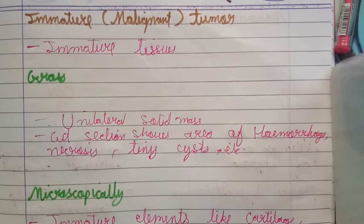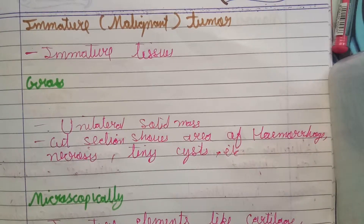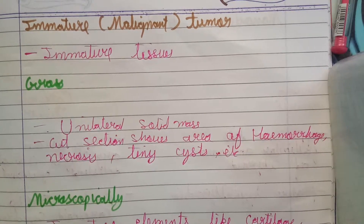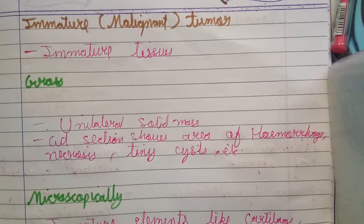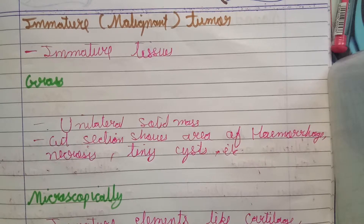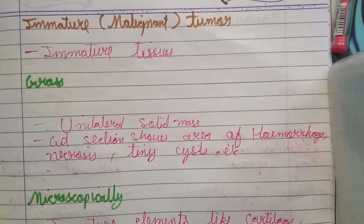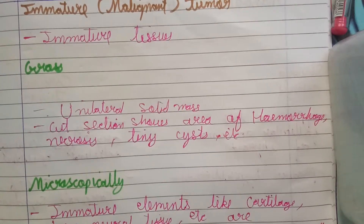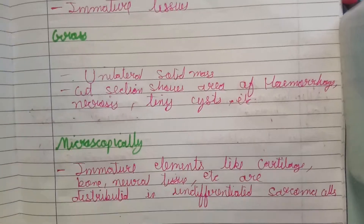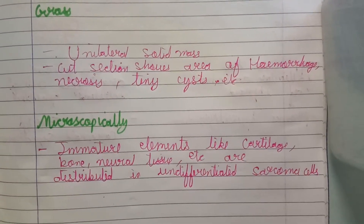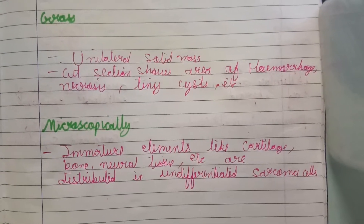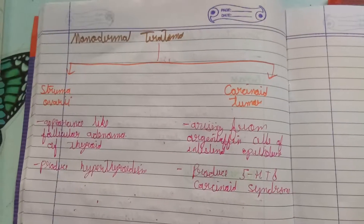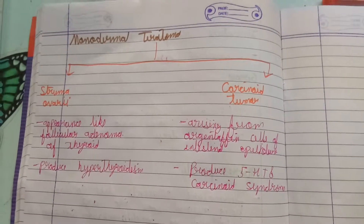Immature teratoma is a malignant tumor containing immature tissue. Grossly it is a unilateral solid mass; the cut section shows areas of hemorrhage and necrosis. Microscopically, it consists of immature elements like cartilage, bone, and neural tissue distributed among undifferentiated sarcoma cells.